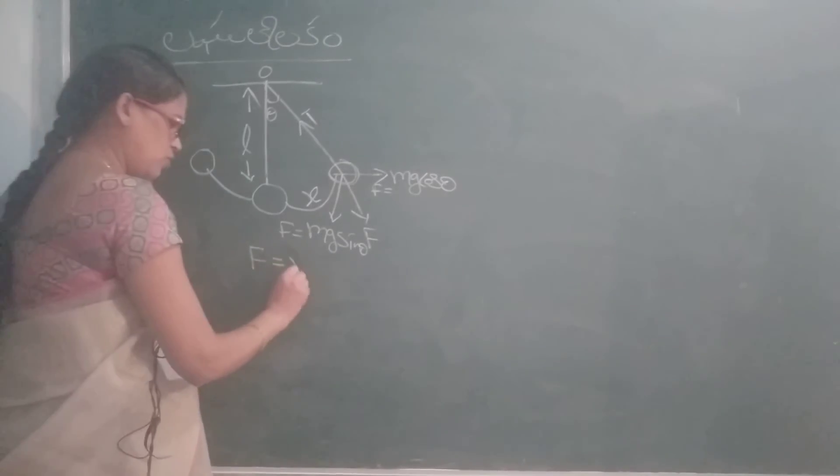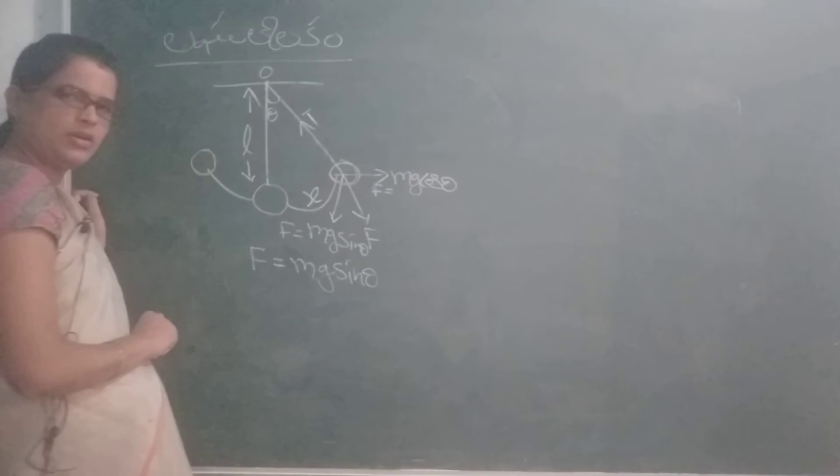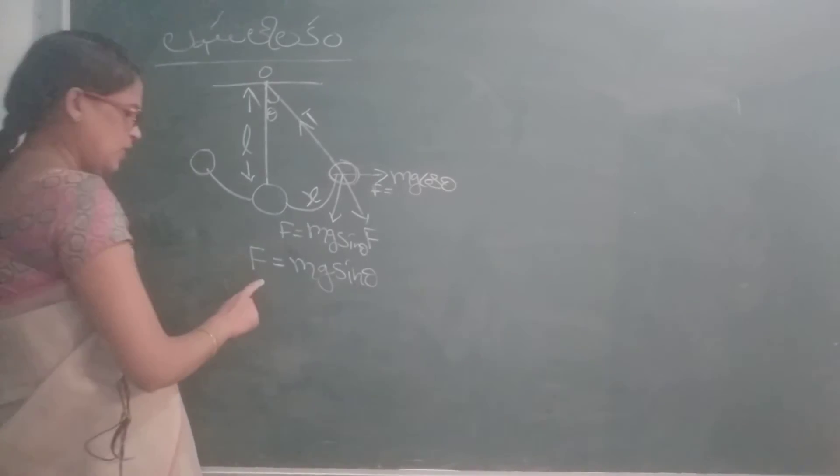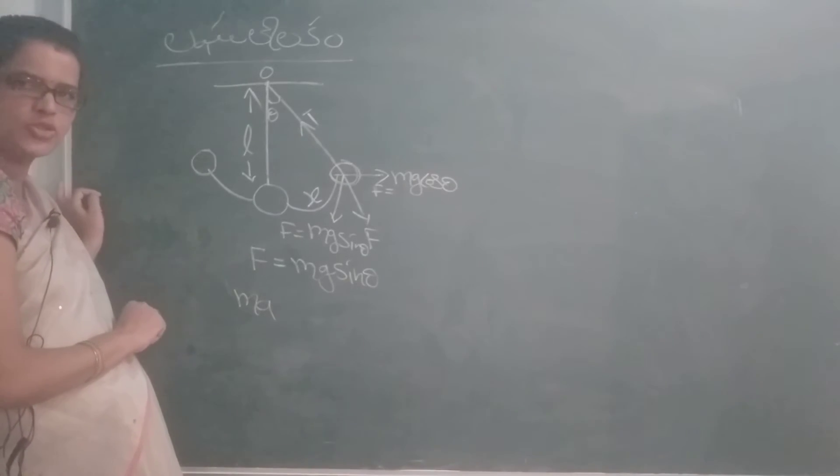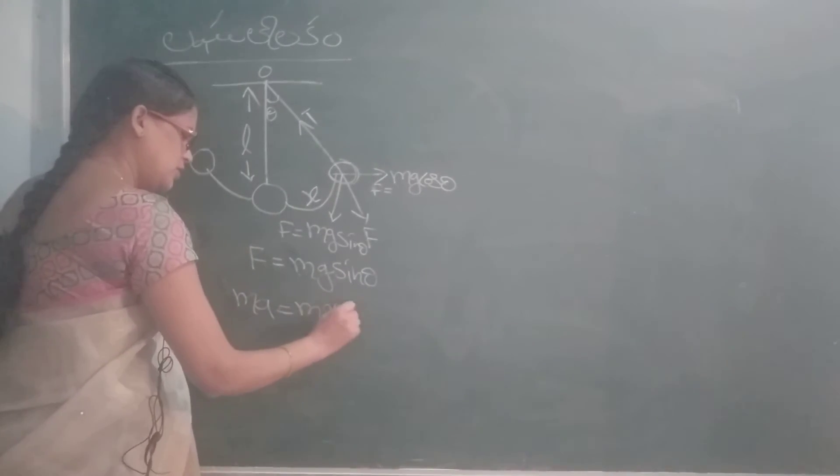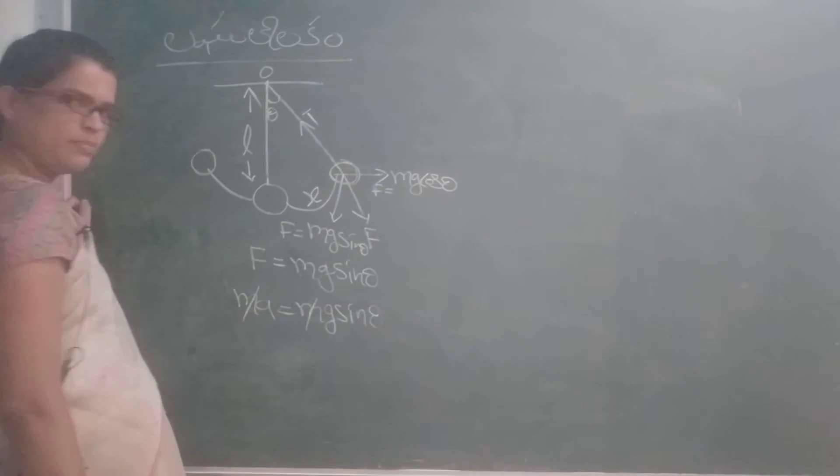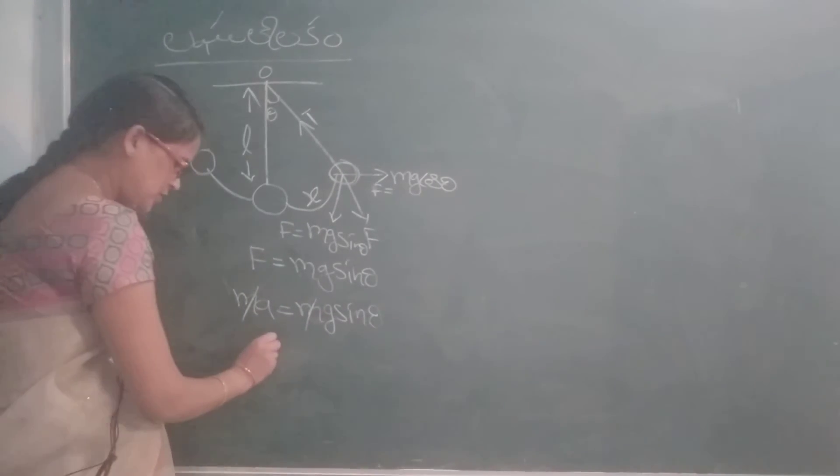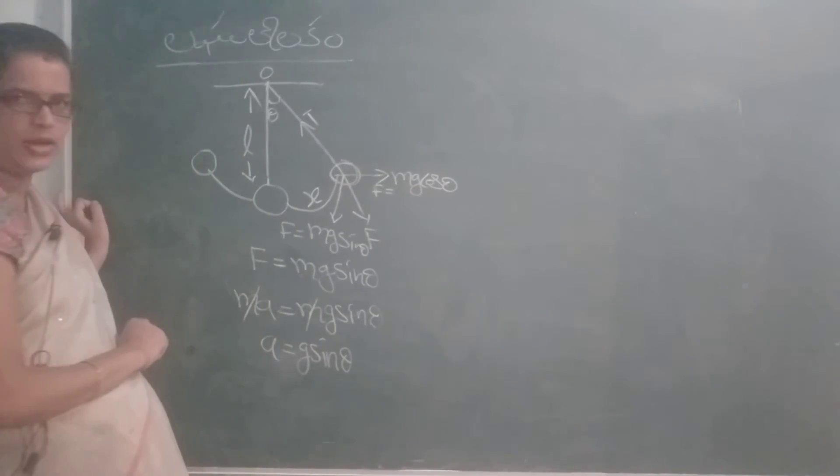F is equal M.G. Signed Theta. F is equal M. Cancel. Next A is equal G. Signed Theta.